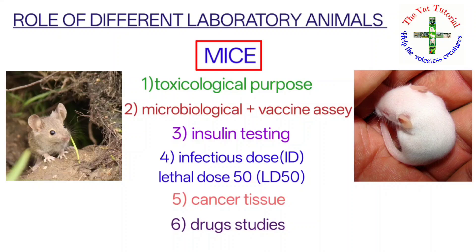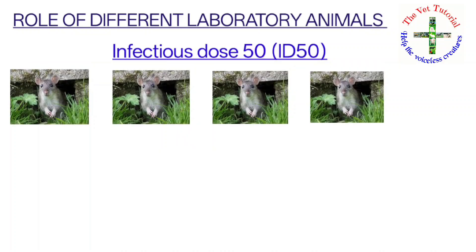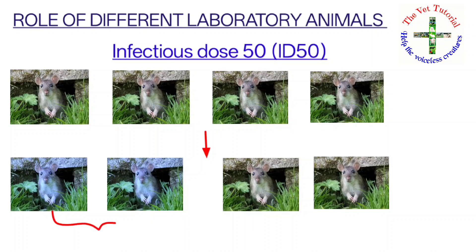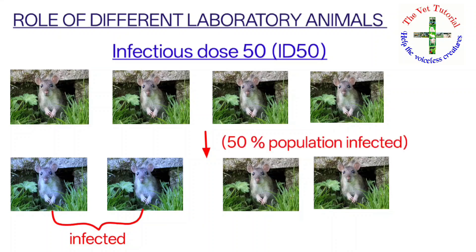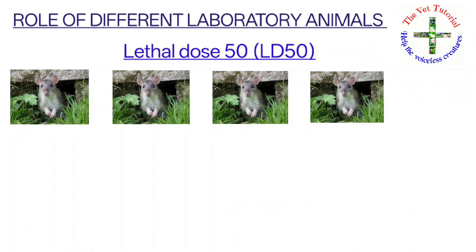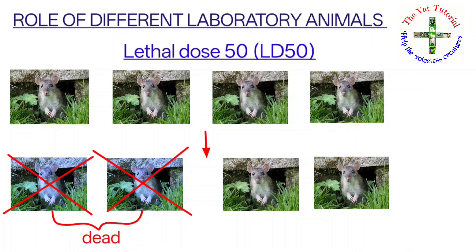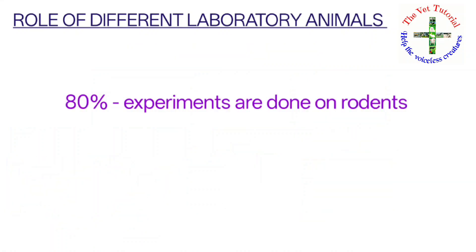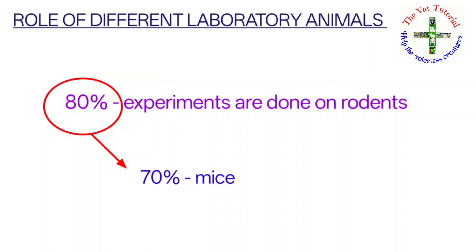Let's briefly understand what is infectious dose (ID50) and lethal dose (LD50). Among four animals, suppose two animals are infected — that means 50 percent of the population are infected, hence it is infectious dose 50 (ID50). Similarly, if two among four animals are dead, it is lethal dose 50 (LD50). Remember that 80 percent of experiments are done on rodents, and among rodents, about 70 percent of experiments are done on mice.